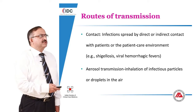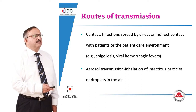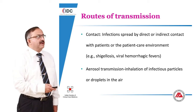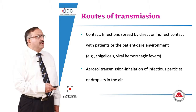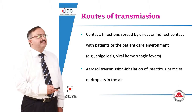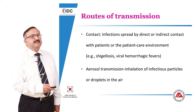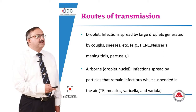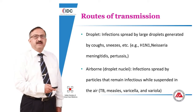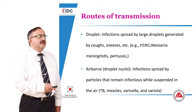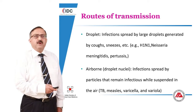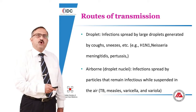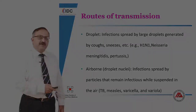Routes of transmission. Contact transmission is by direct or indirect contact with patients or the patient care environment; examples include shigellosis and viral hemorrhagic fever. Aerosol transmission is inhalation of infectious particles or droplets in the air. Droplet infection occurs via large droplets generated by coughing or sneezing — H1N1, Neisseria meningitidis, and Pertussis are clear examples, where the particles are large and do not travel more than 1 meter from the source.